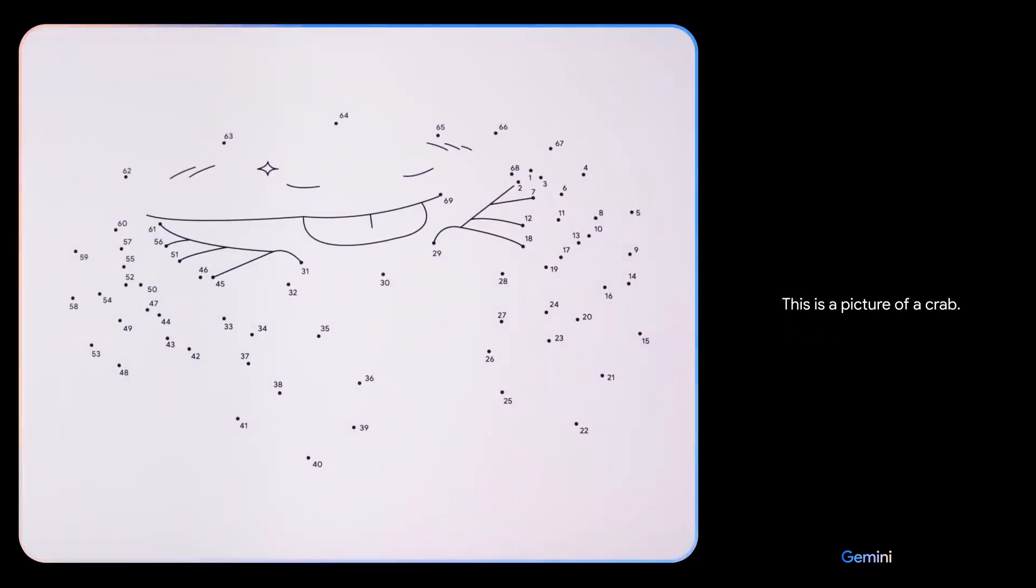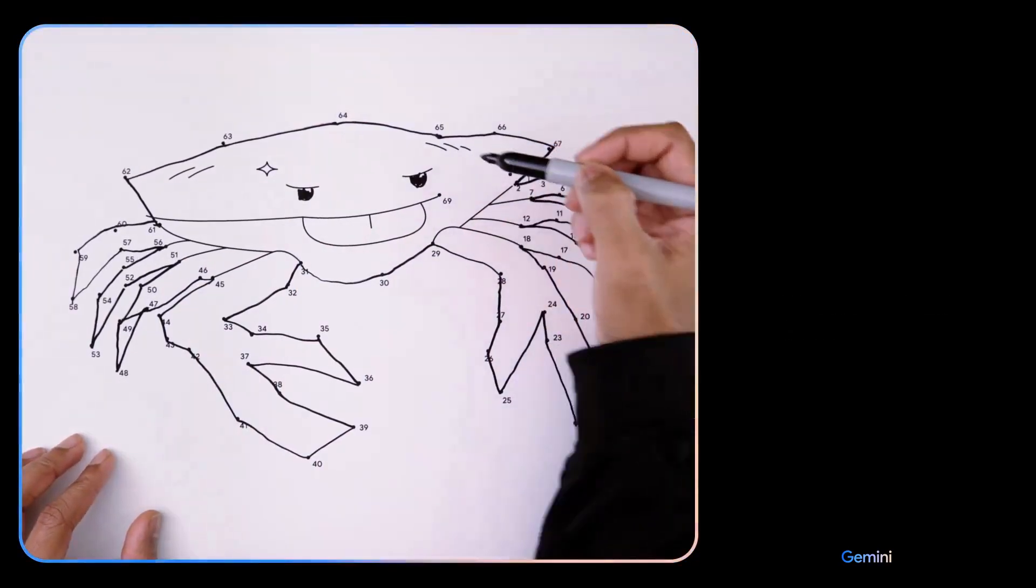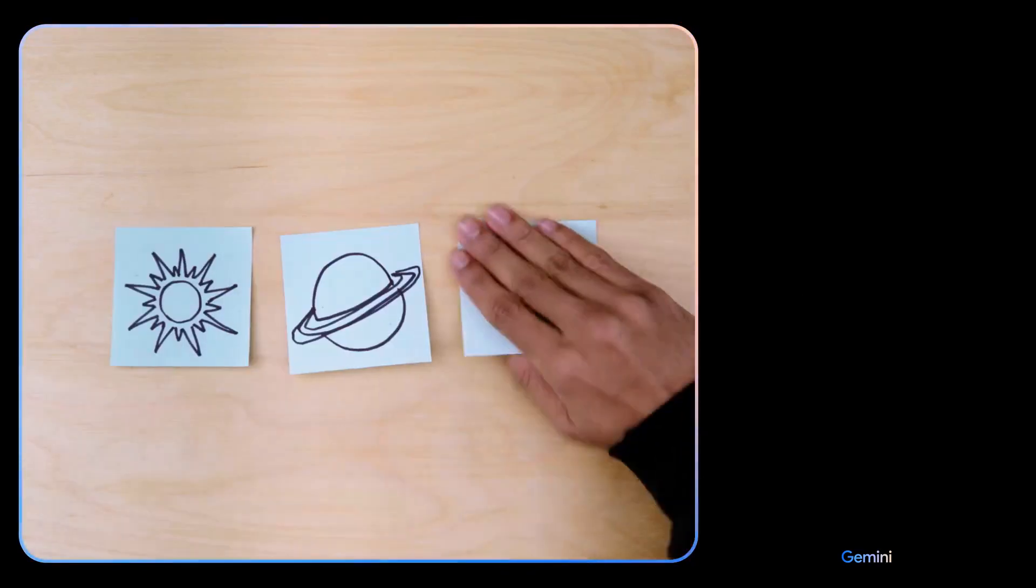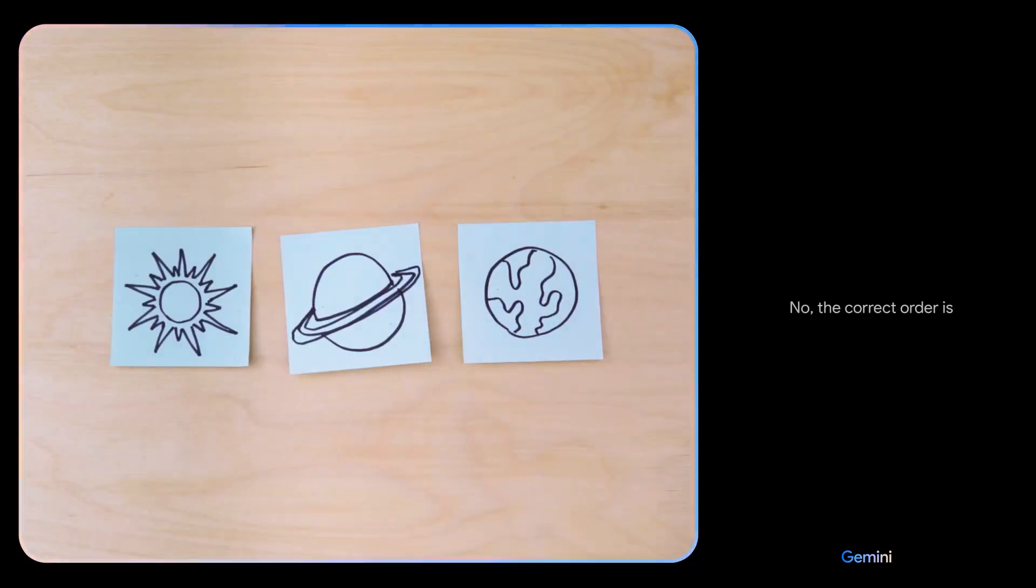This is a picture of a crab. That's right. Is this the right order? No. The correct order is Sun, Earth, Saturn.